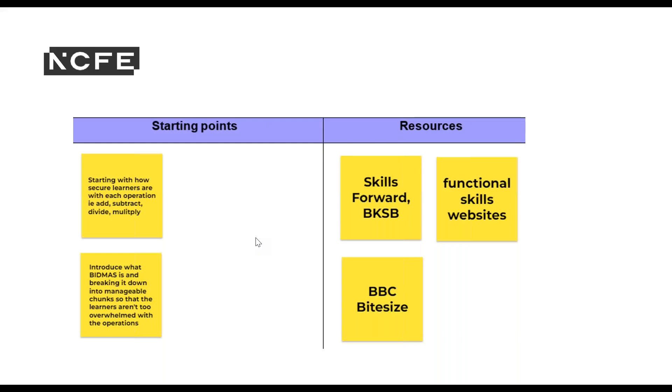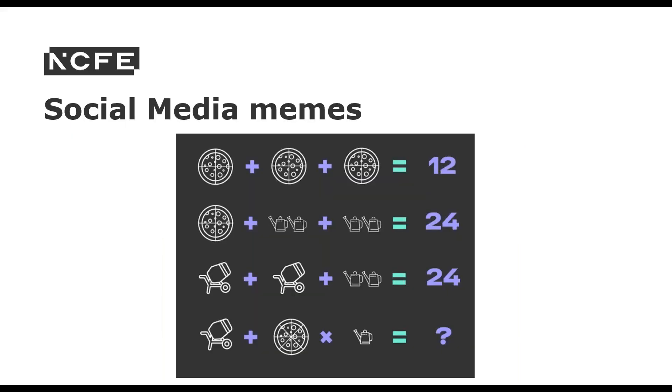And some of the resources that our attendees use are various functional skills websites, BBC Bitesize and also Skills Forward which is now the NCFE skills assessment tools and BKSB. Here's an idea to start off a discussion on the order of operations. You may have seen these kind of social media memes. This one is an NCFE branded one but I often come across these on Facebook and I quite enjoy taking part in them and also reading the discussions that follow when people are adamant that they are right when perhaps actually they're wrong.